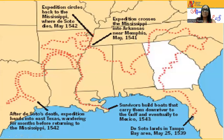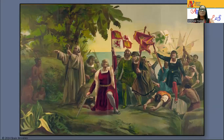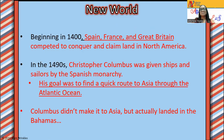You might want to print out the blank map and write down his route, because there might be a question about where he entered and where he eventually died. The three G's — gold, God, and glory — are the things that the Europeans were looking for. The New World exploration began in the 1400s. Spain, France, and Great Britain competed to conquer and claim land in North America. Christopher Columbus was given ships and sailors by the Spanish monarchy — meaning the king and queen. His goal was to find a quick route to Asia through the Atlantic Ocean. Columbus didn't make it to Asia, but he actually landed in the Bahamas.